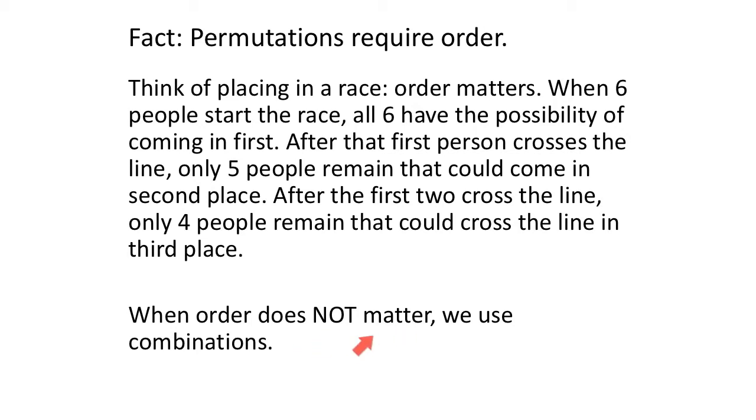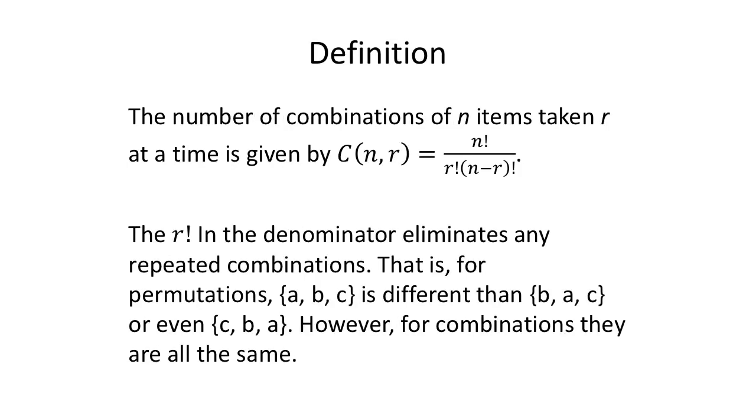But when order does not matter, maybe we're using a committee. We just want a group of people to do something. It doesn't matter who's first, second, and so on. The number of combinations of n items taken r at a time is given by C(n,r). Notice the only difference in the formula is this little r factorial. This period is due to the end of the sentence. This has nothing to do with the math. n factorial over r factorial times (n minus r) factorial. And this r factorial in the denominator eliminates repeated combinations.